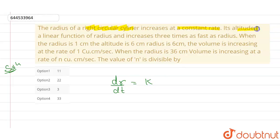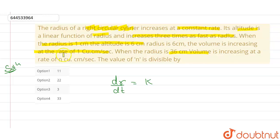Its altitude is a linear function of radius and increases three times as fast as the radius. When the radius is one centimeter and the altitude is six centimeters, the volume is increasing at the rate of one cubic centimeter per second. When the radius is 36 centimeters, the volume is increasing at a rate of n centimeters cube per second, and we need to find what n is divisible by.